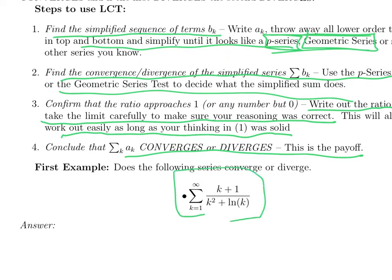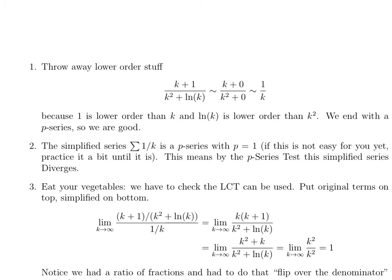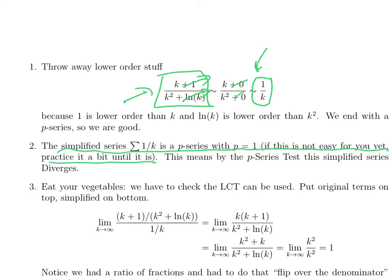Here's the first series: sum k equals 1 to infinity of (k plus 1) over (k squared plus ln k). Step one — take the sequence of terms, (k plus 1) over (k squared plus ln k), and throw away low-order terms. 1 goes to infinity slower than k; ln k goes slower than k squared. So this behaves like k over k squared, which is 1 over k. A complicated series turns into a simple series. 1 over k is a p-series with p equals 1, and p equals 1 diverges — that's the harmonic series.